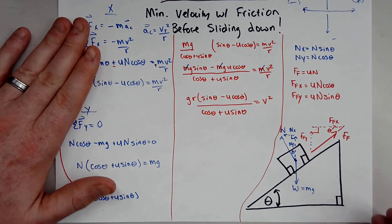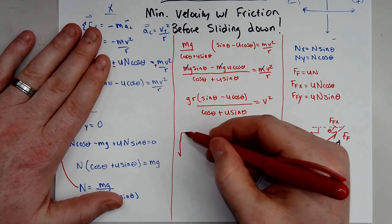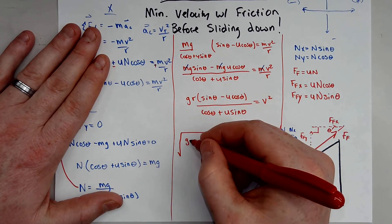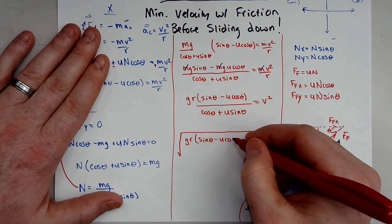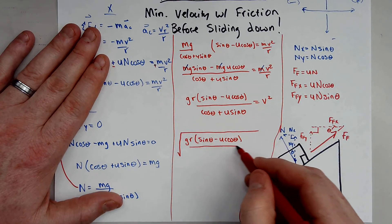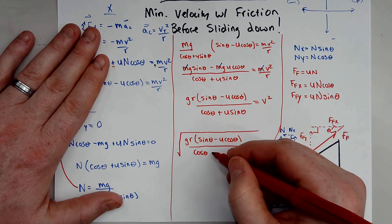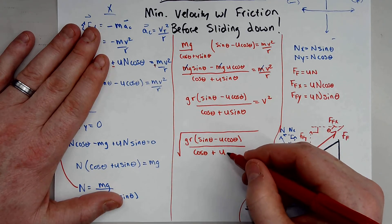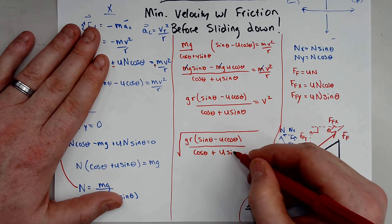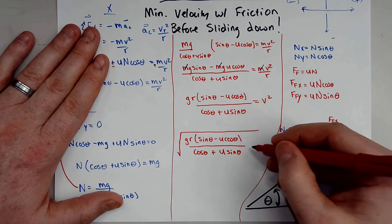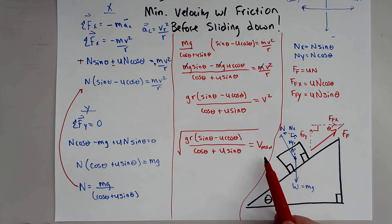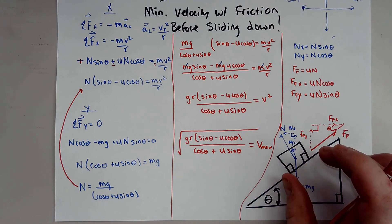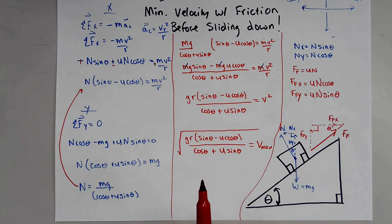Taking the square root of both sides, the minimum velocity is: v_min = √[ g·r · (sine theta − mu cosine theta) / (cosine theta + mu sine theta) ]. This is the minimum velocity the car must maintain going around the banked corner in order not to slide down the ramp.